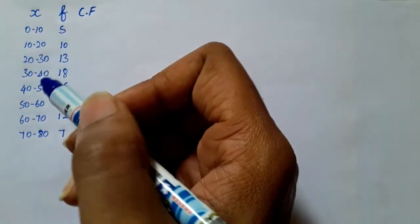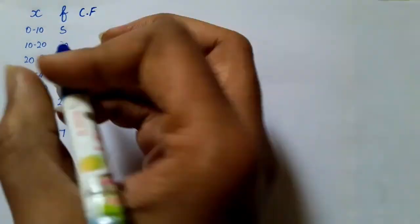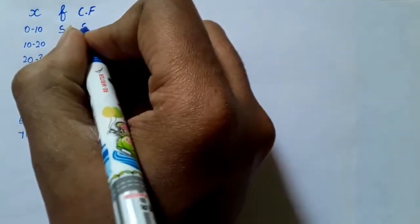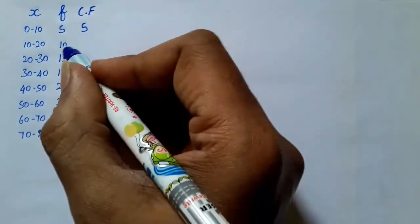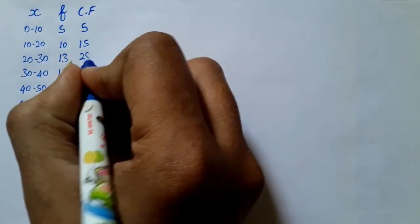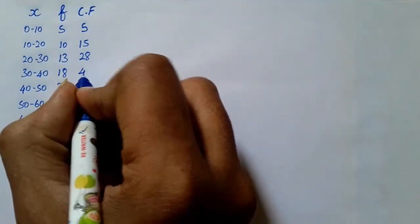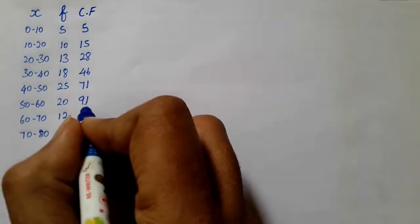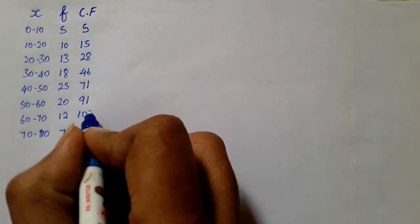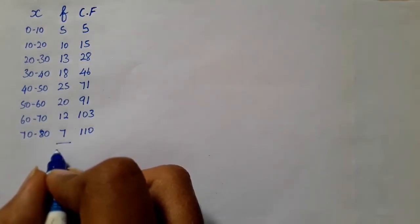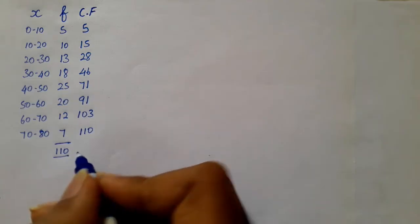We will talk about the x and f. Next, we will talk about cf. We will add 5 plus 10: 15. 15 plus 13: 28. 8 plus 18: 46. 46 plus 25: 71. 71 plus 20: 91. 91 plus 12: 103. And finally, 7 add 110. So, f is 110.